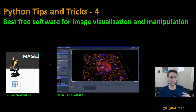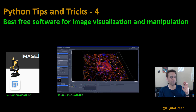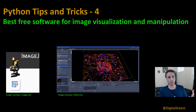ImageJ is very versatile and you can go ahead and use it. Zen is also very versatile — there are a lot of functions. Again, I'm talking about the free version, including 3D visualization. Let me give you a quick demo in terms of how to get your hands on each of these and how to basically open your images and get a quick feel for it.